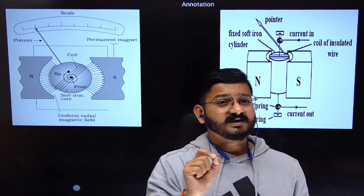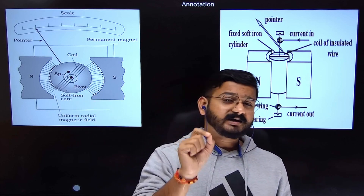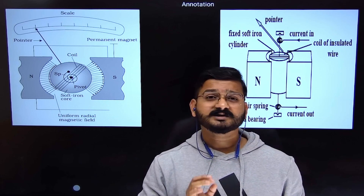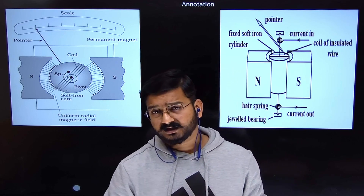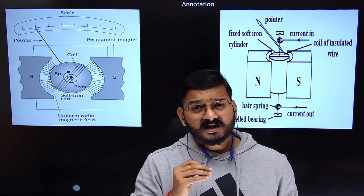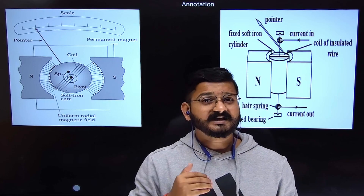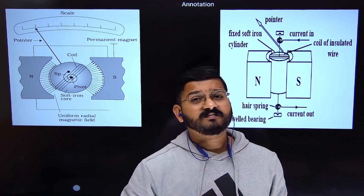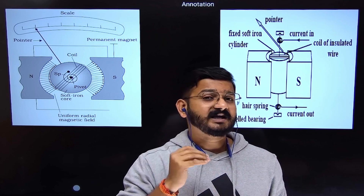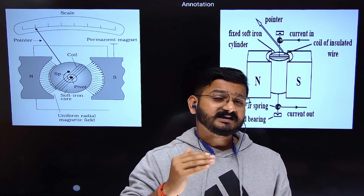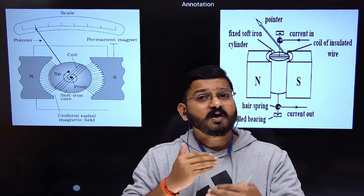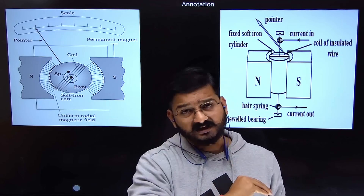Why is a soft iron core required? A soft iron core has high magnetic permeability. Due to this high magnetic permeability, it enhances the strength of the magnetic field. If the strength of the magnetic field increases, the sensitivity of the galvanometer — and the torque produced — will also increase.